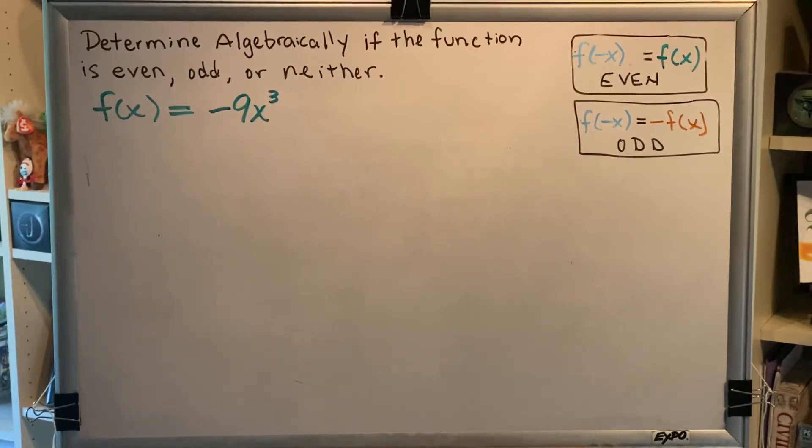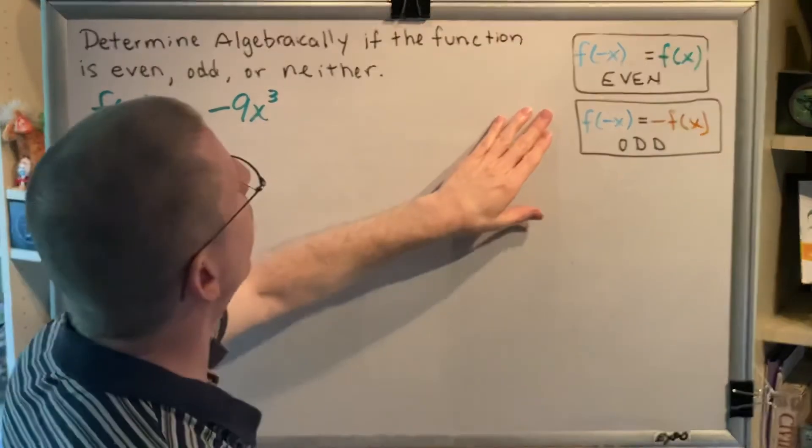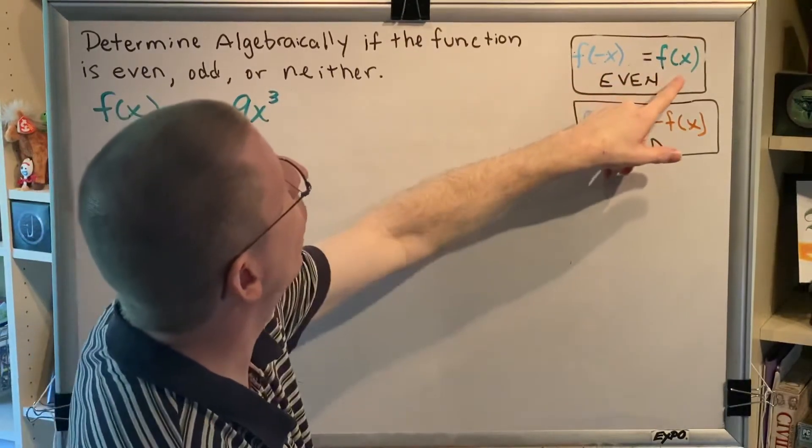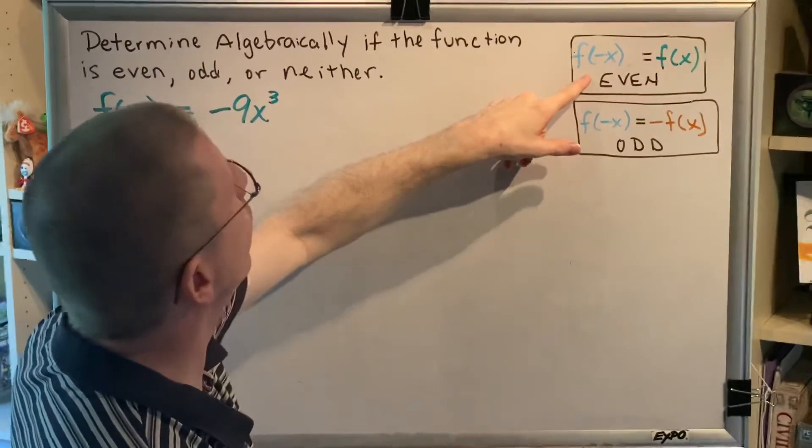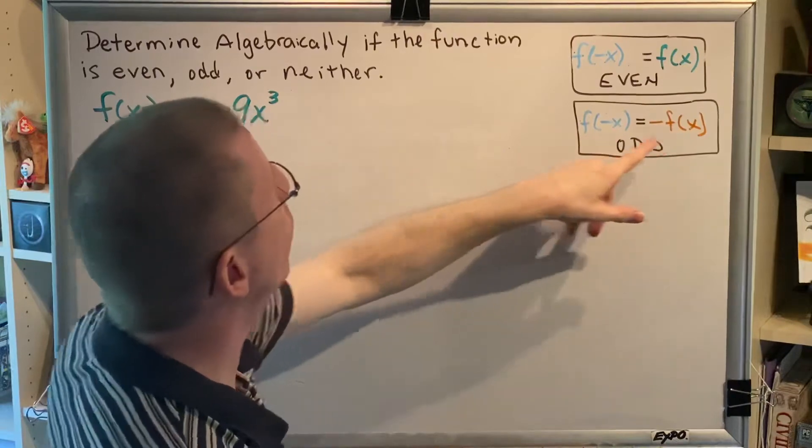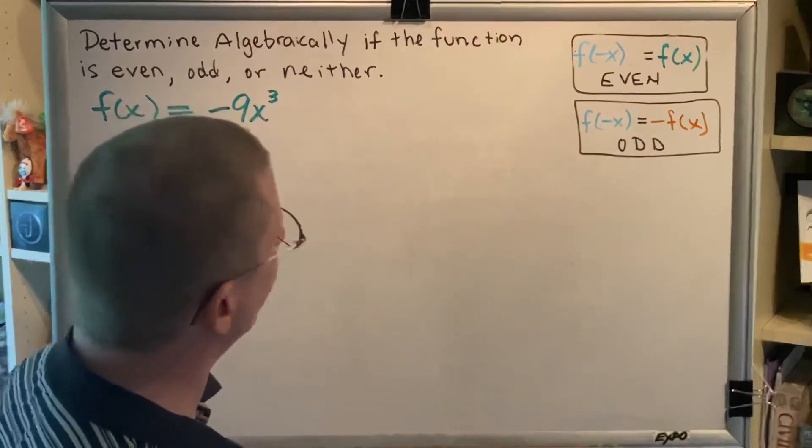I've got the shortcut versions of our definitions right up here. If f of negative x equals f of x, then we are dealing with an even function. And if f of negative x equals negative f of x, then we are dealing with an odd function.